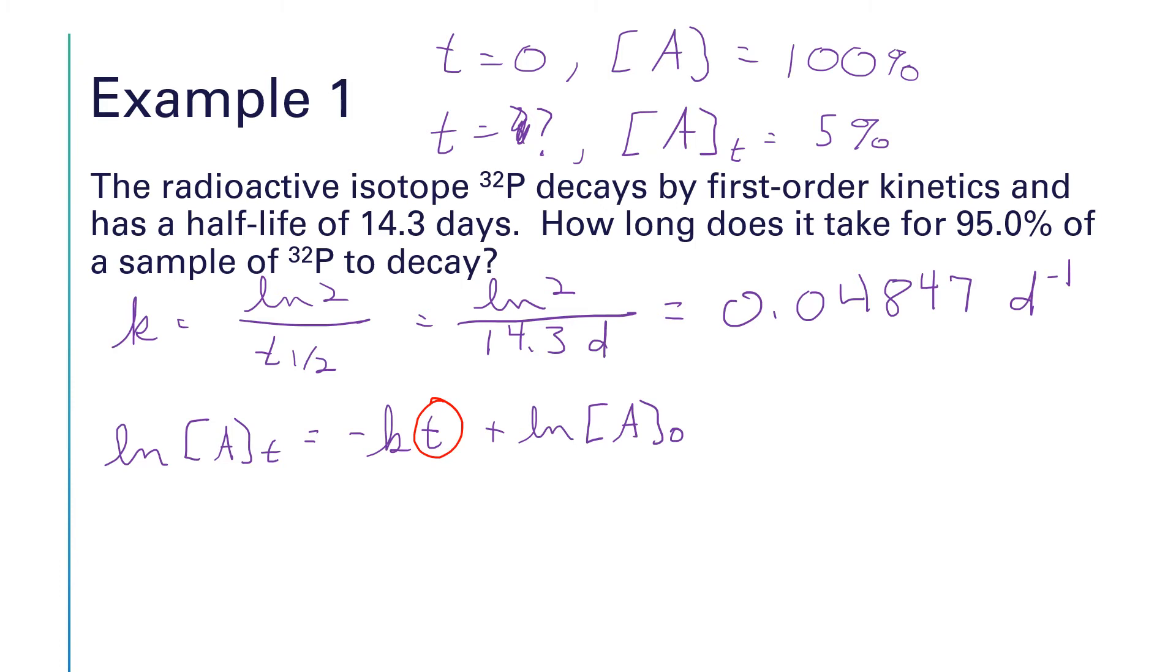And then the natural log of A0 will be the natural log of 100, because A0 is 100. So if I'm going to rearrange this equation to get t isolated, I can subtract the natural log of A0 from both sides. And that'll give me the natural log of A sub t minus the natural log of A0 is equal to minus kt. And so to get t by itself, I can divide both sides of this equation by minus k, and that'll give me the natural log of A sub t minus the natural log of A0 divided by minus k is equal to t.